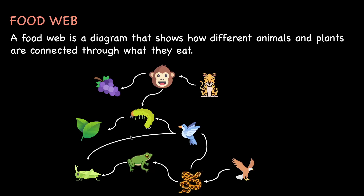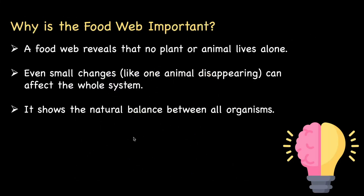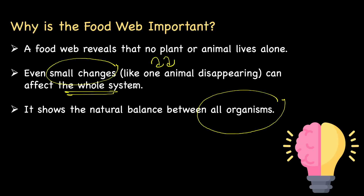A food web tells us how different animals and plants are connected through what they eat. It talks about how all organisms are connected to each other, and how small changes — like one animal disappearing — can not just impact a single food chain, but affect the whole system altogether. The food web also shows how all organisms are connected and how they maintain a natural balance. With this, we have understood the basic fundamentals of what is a food chain and what is a food web.